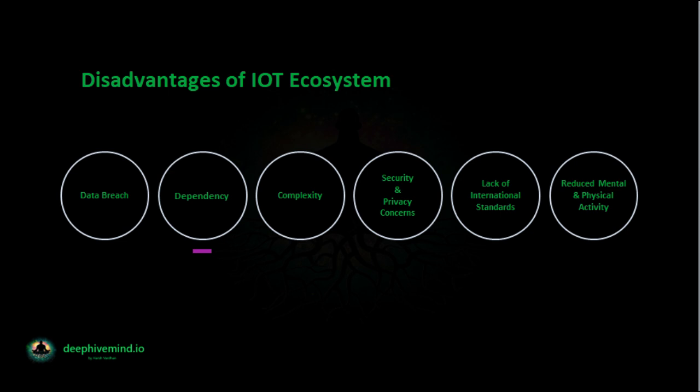Dependence: The Internet of Things largely depends on Internet connectivity. Without a stable Internet connection, IoT devices fail to work and tasks are incomplete. Complexity: IoT seems to complete complicated tasks, yet a huge set of complex operations run behind these devices. Users are often unaware of internal mechanisms, so even a minor inconvenience requires contacting customer support. If the software makes a wrong calculation, the entire operation fails. One machine failure can cause the entire network to suffer.